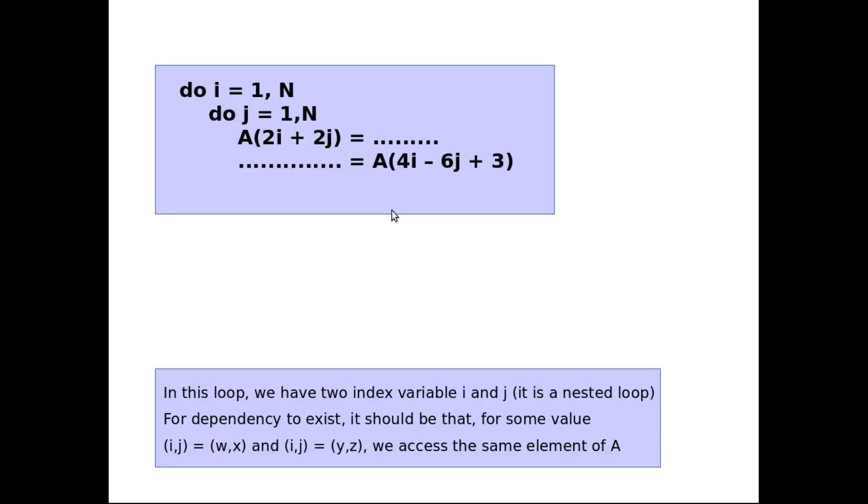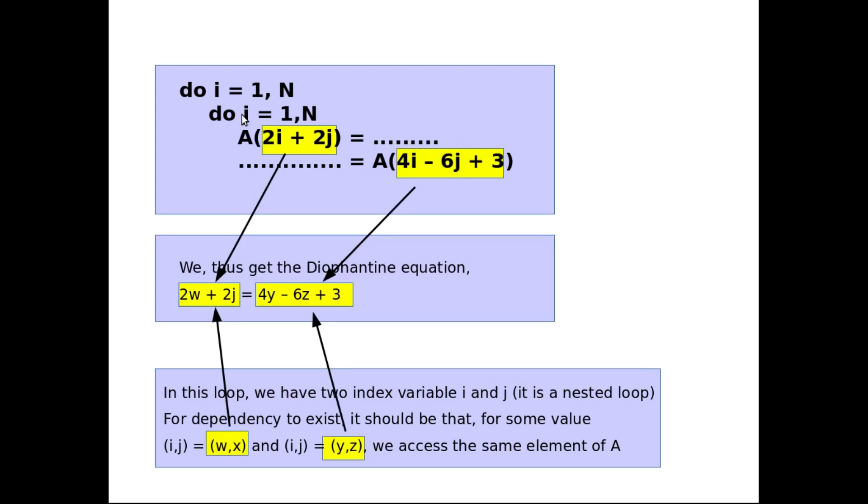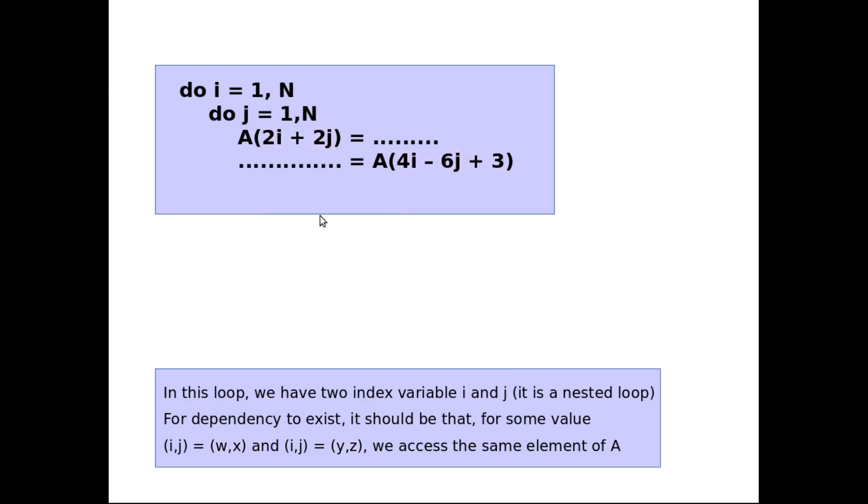What about this loop? We will use the same technique for this loop. However, this loop is a nested loop. We have two index variables i and j. And now, since we have two index variables i and j, for dependency to exist, it should be that for some value (i,j) equal to (w,x) and (i,j) equal to (y,z), we access the same element of A.